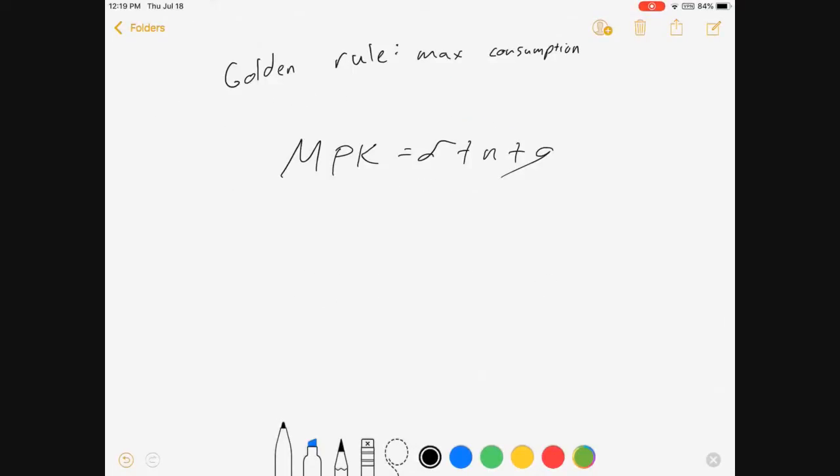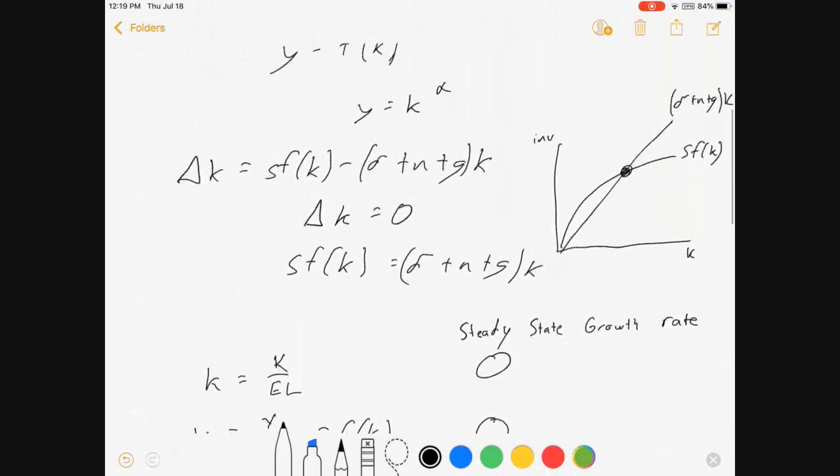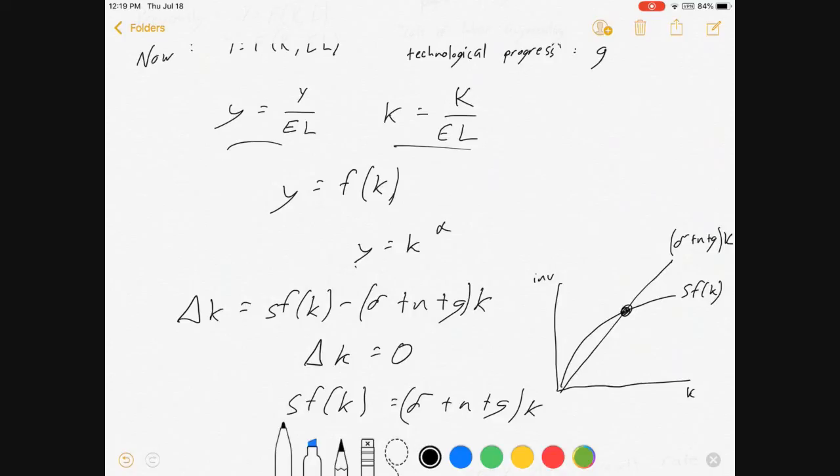So, what is the mpk? I told you earlier that we were going to assume that y was equal to f of k, which was k to the alpha. That was way back up here when I assumed a Cobb-Douglas starting point.